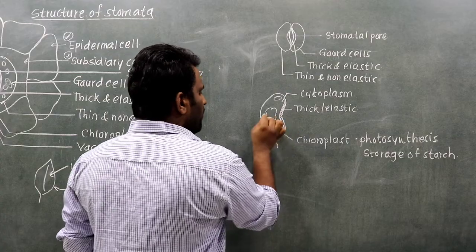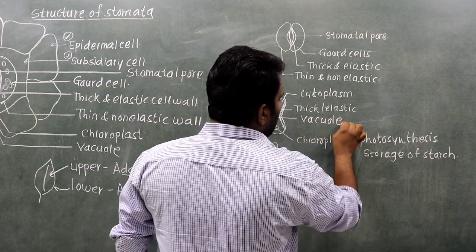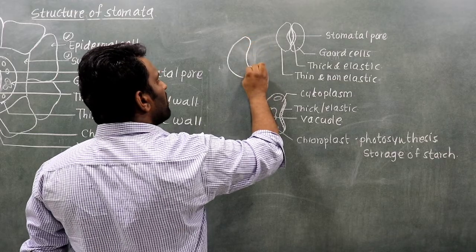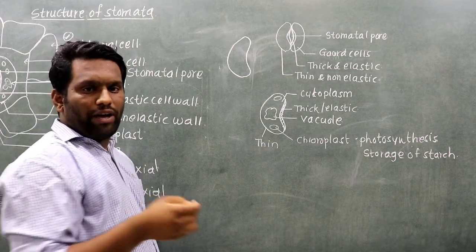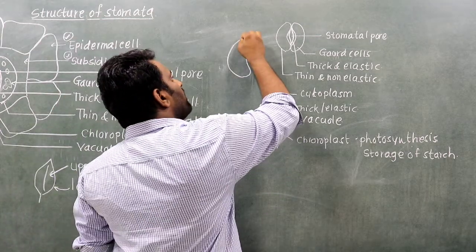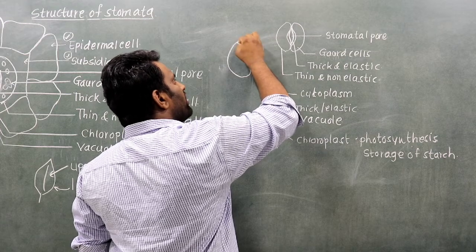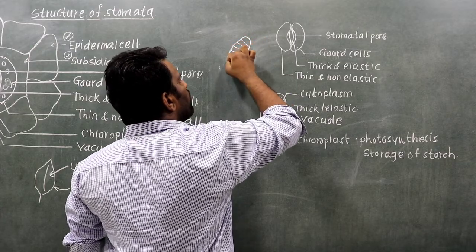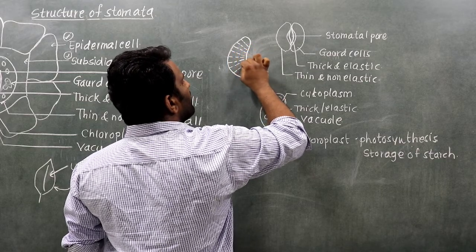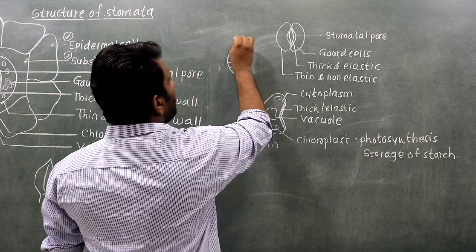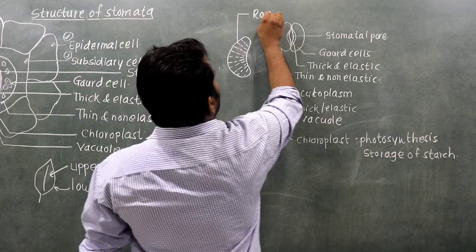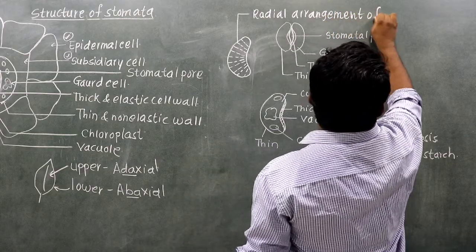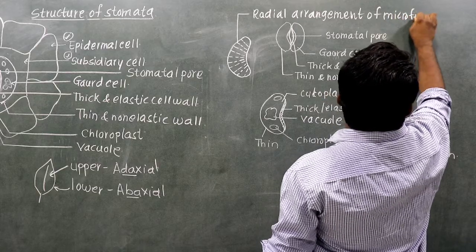A vacuole is present in the guard cell. Inside the cell there is a cytoskeleton made of microfibrils, which are radially arranged. This radial arrangement of microfibrils is responsible for the opening and closing of stomata. This is a very important structural feature.